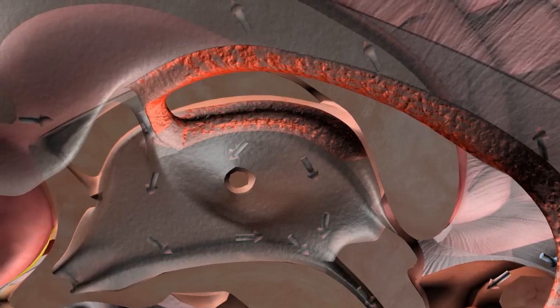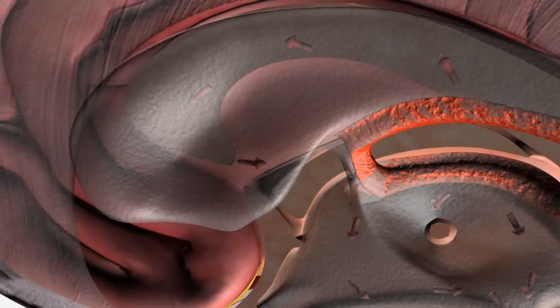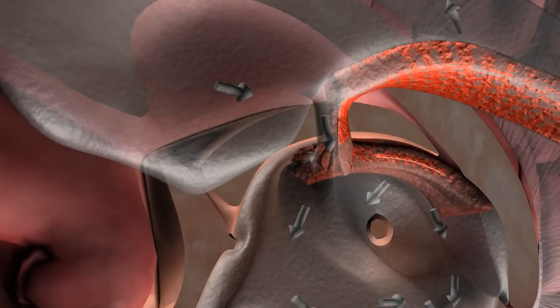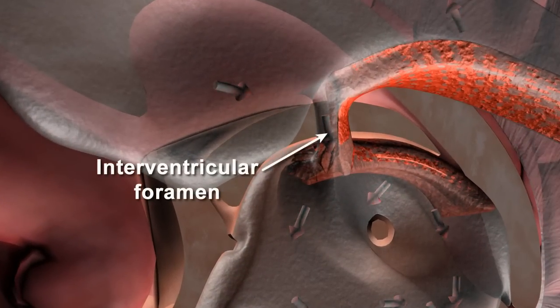CSF flows from the choroid plexus through the body and tail of the lateral ventricle and into the third ventricle via the intraventricular foramen.